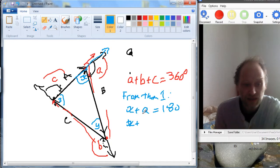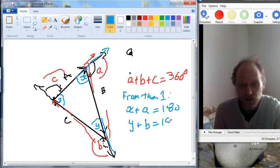So on this line here, this is a straight line, so this would be 180, and we can say the same for Z and C here. So Z plus C is equal to 180.